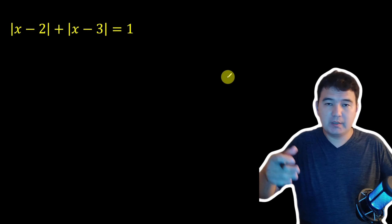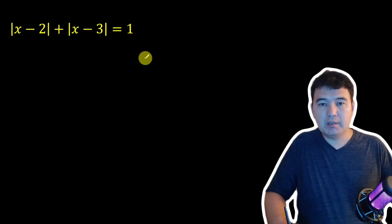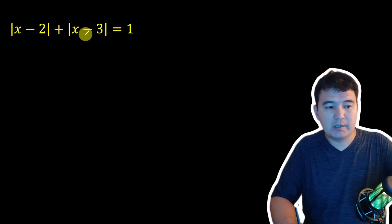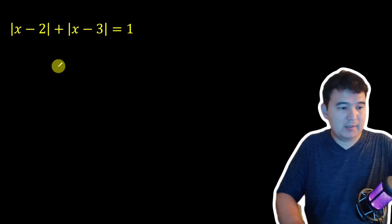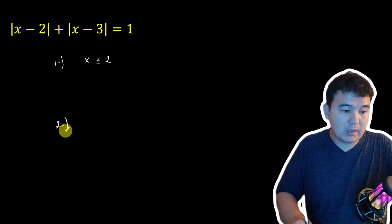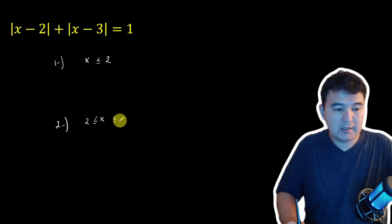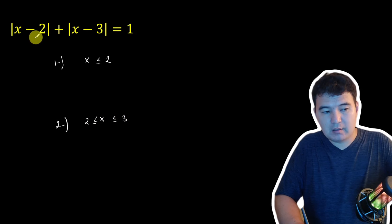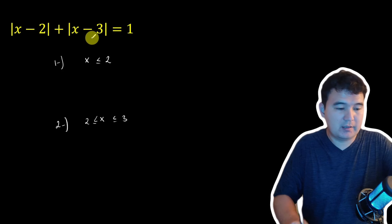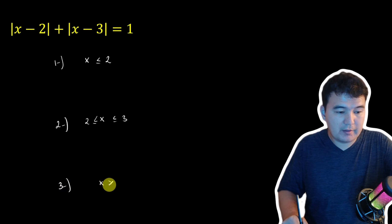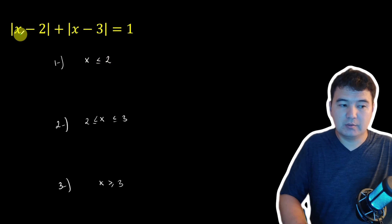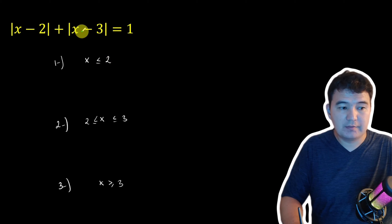Now let's do the option of opening the absolute values by dividing the problem into several different cases. Since we have |x minus 2| and |x minus 3|, we consider: x less than or equal to 2 in the first case; x greater than 2 but less than 3 in the second case — because numbers greater than 2 will result in different signs; and lastly, numbers greater than 3. Starting with the first case: if x is less than 2, both expressions inside the absolute values are negative.